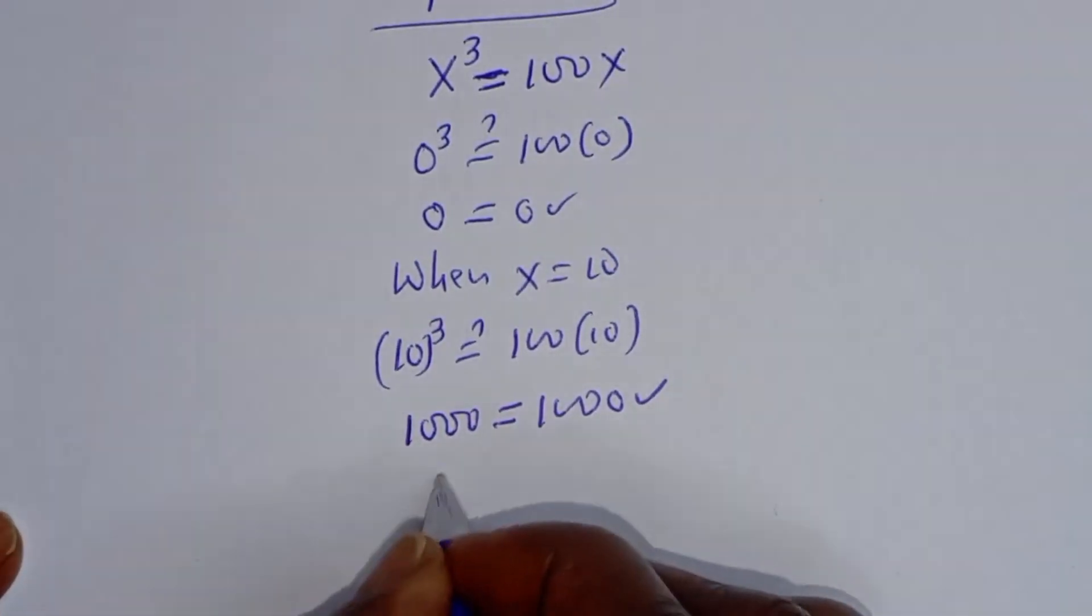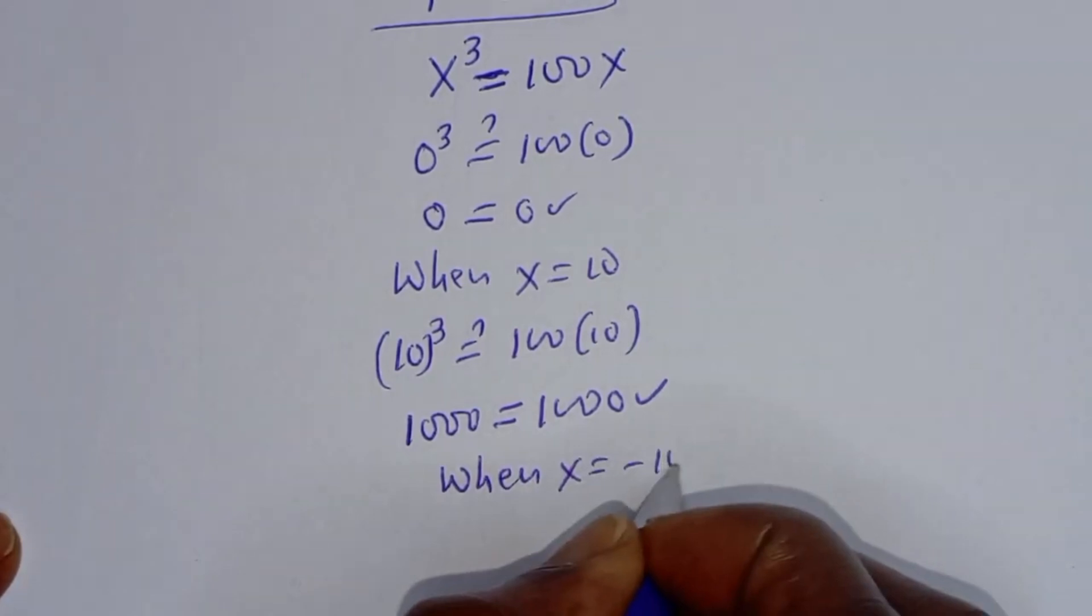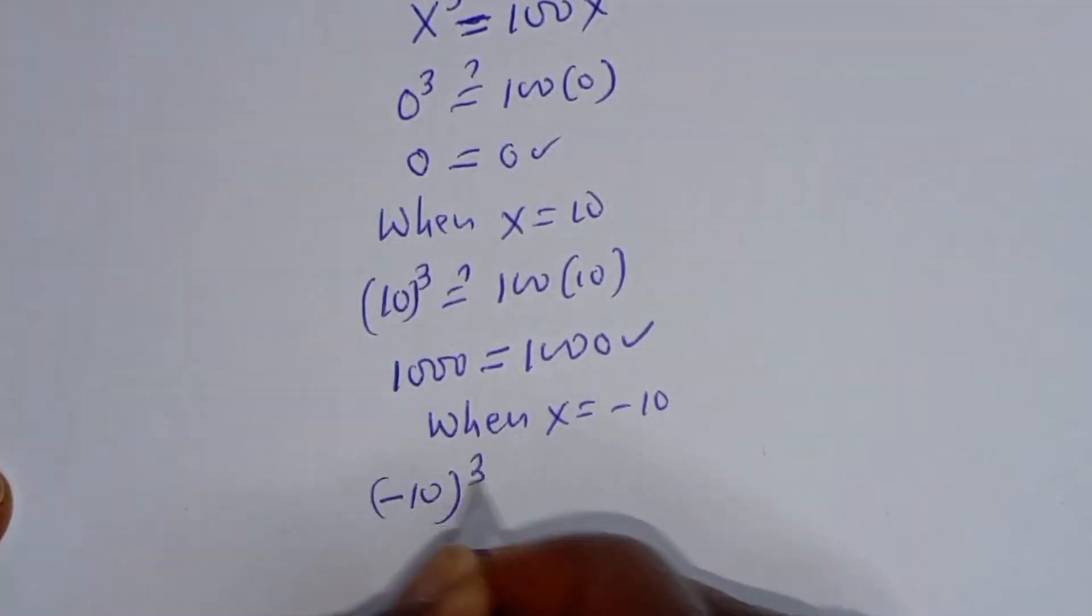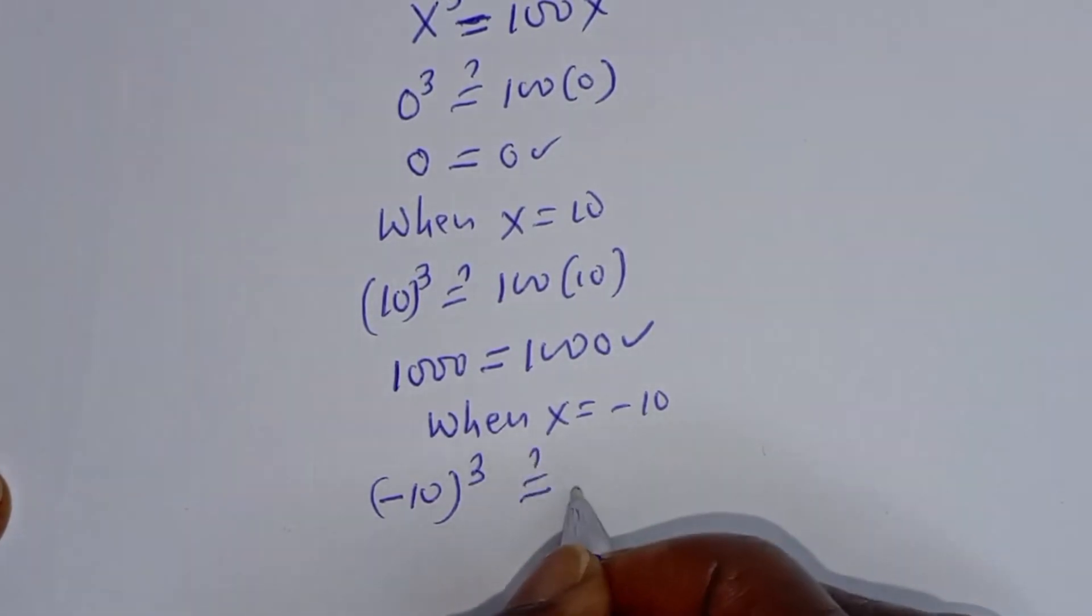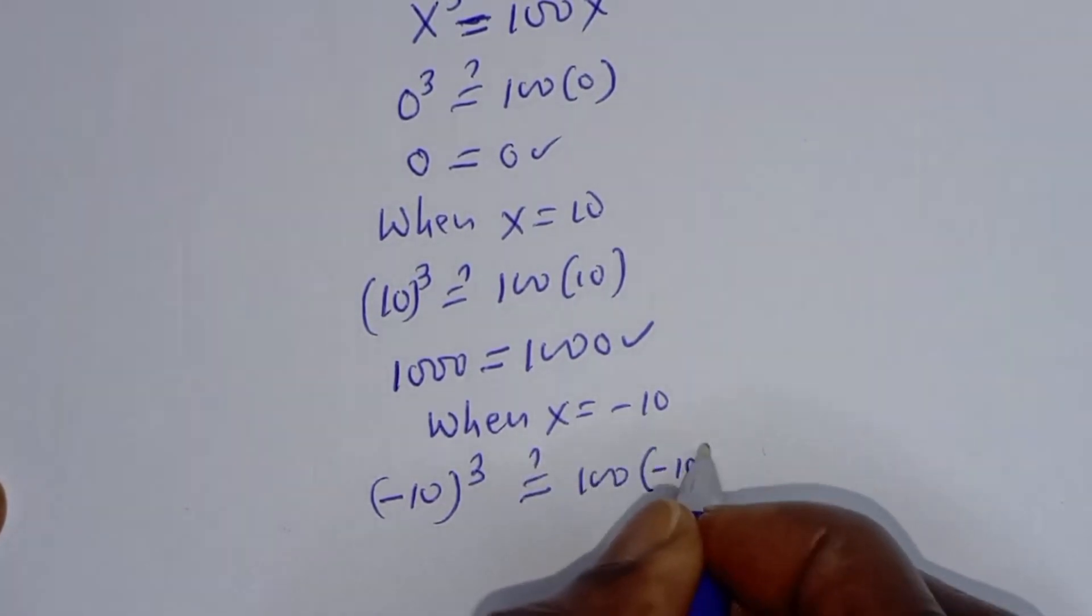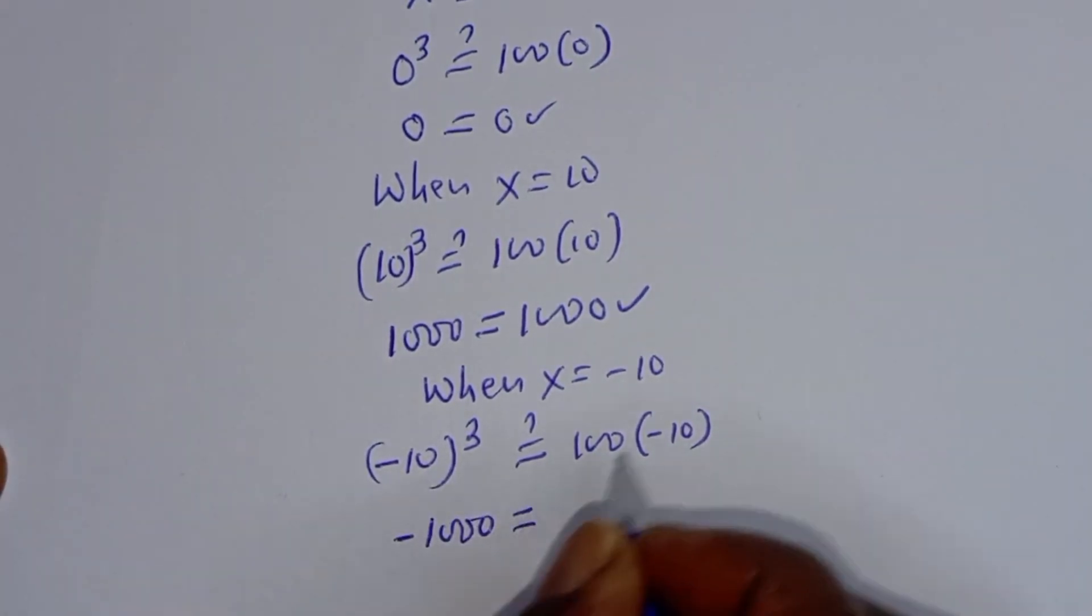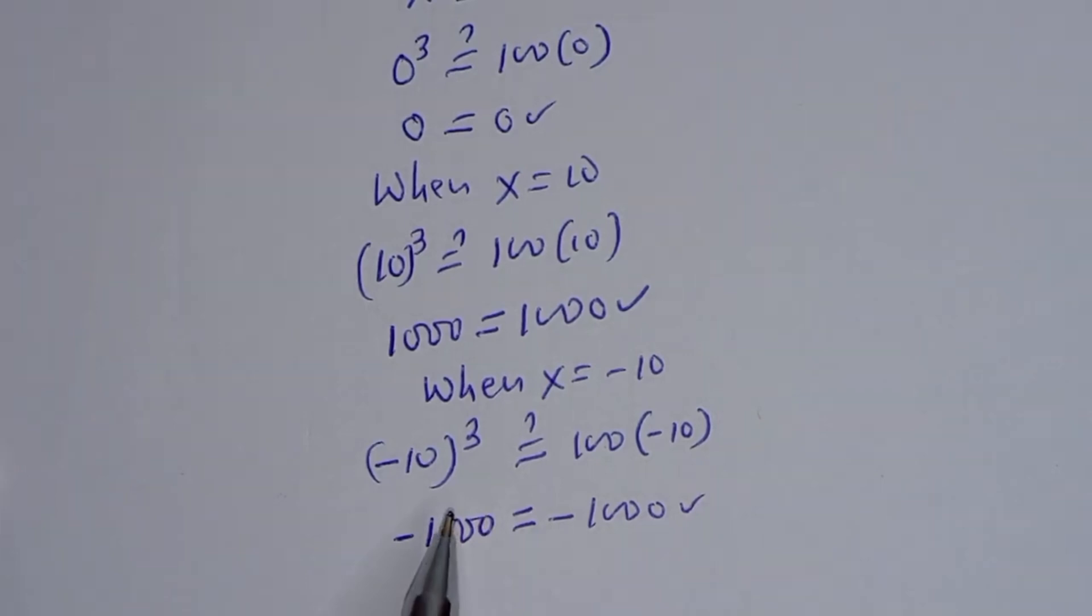Let's check when x equals minus 10. Minus 10 to the power of 3 must equal 100 multiplied by minus 10. The left hand side: minus 1000 equals 100 times minus 10, which is minus 1000. This is also true.